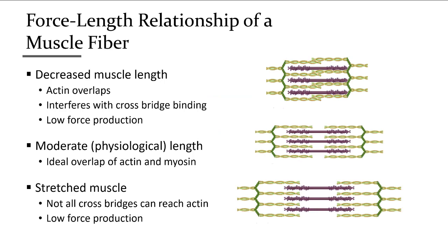The force-length relationship means that when a muscle is in a very shortened state, overlap from either side of the sarcomere gets in the way of cross-bridges, reducing force production. When the muscle is fully extended and overstretched, not all cross-bridges have a place on actin to bind, so force is not maximal either. Maximal force occurs right in the middle, where all cross-bridges can bind to actin.